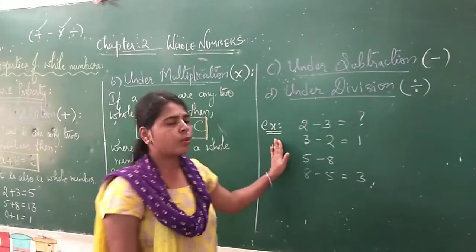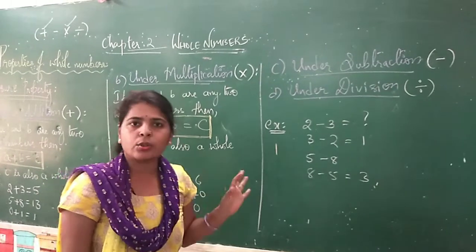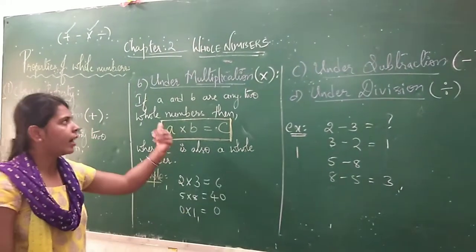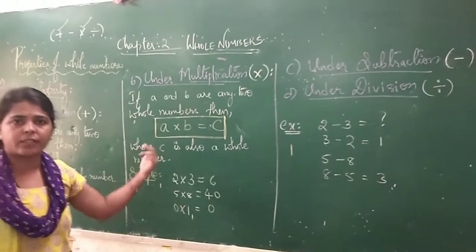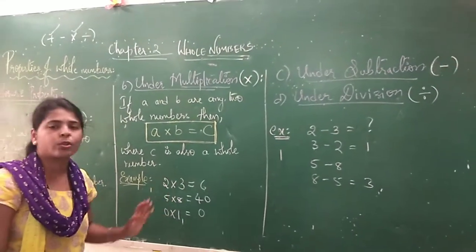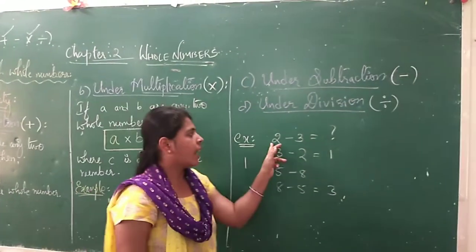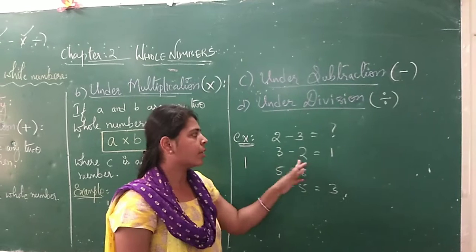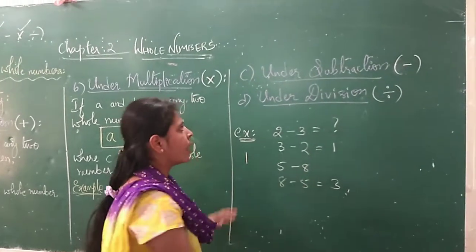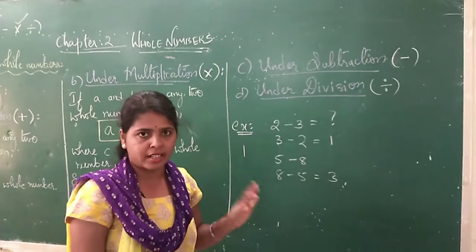So here the property says: take any two whole numbers — when you apply addition, subtraction, multiplication, or division, the result should be a whole number. But here, either you do 2 minus 3 or 3 minus 2, you are not getting the same valid whole number result. So under subtraction, the closure property is not satisfied.